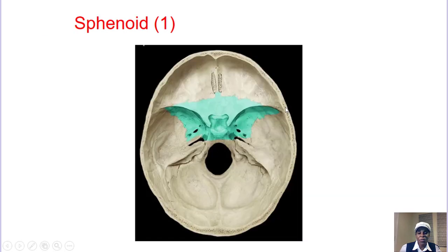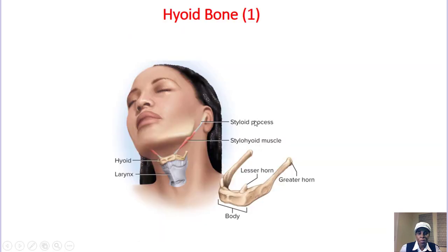Then the sphenoid — the sphenoid is in the center of the skull and looks like a bird. And the hyoid, like I said, is not part of the cranial bones; we just added it to make the acronym sound better. It's in the superior part of the larynx on your neck.